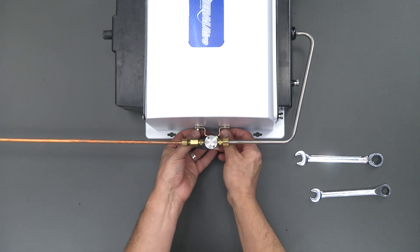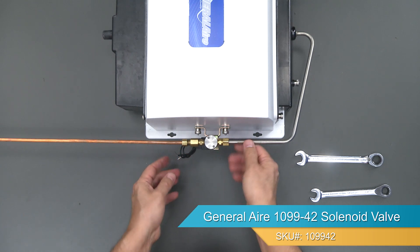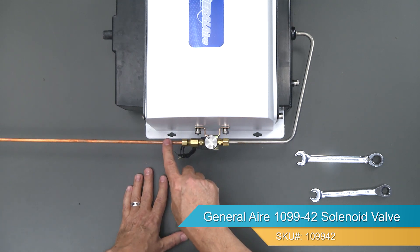And now let's just tighten up the valve itself. There we go. We're all done. The only thing left is to turn the water back on and reconnect our electrical.